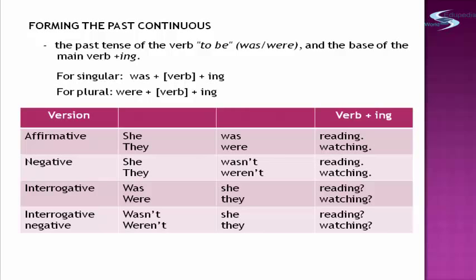In the affirmative version: 'She was reading.' 'They were watching.' In the negative version: 'She wasn't reading.' 'They weren't watching.' In the interrogative version: 'Was she reading?' 'Were they watching?' Notice that the verb 'to be' comes first, and the subject is in the middle, between the verb 'to be' and the verb with '-ing.' In the negative interrogative: 'Wasn't she reading?' 'Weren't they watching?'